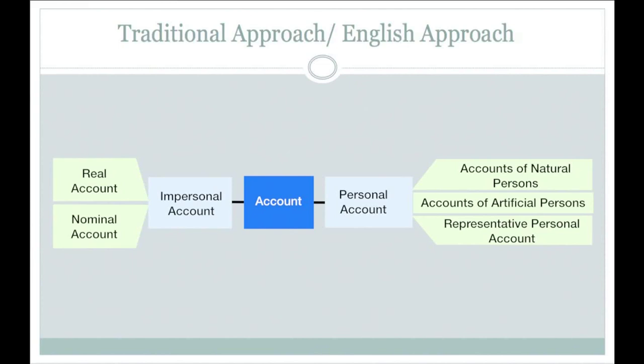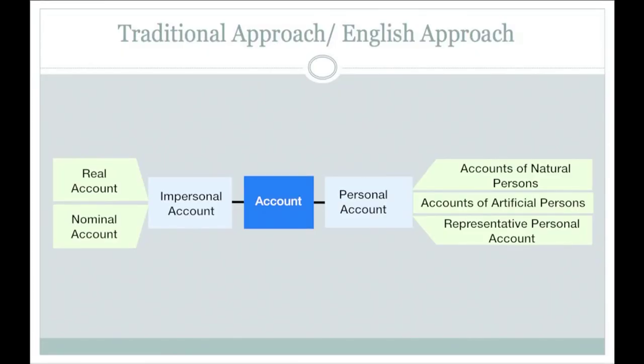Under personal account, we have different types: accounts of natural persons like you and me — Mr. Ram, Ms. Sita, Mr. Jodu, etc. Then, accounts of artificial persons, meaning the accounts of corporates and organizations — for example, the account of my supplier, account of Reliance Company, etc. These are all artificial persons and for accounting purposes we record them as personal accounts. Then there is the representative personal account, which will be discussed later on.